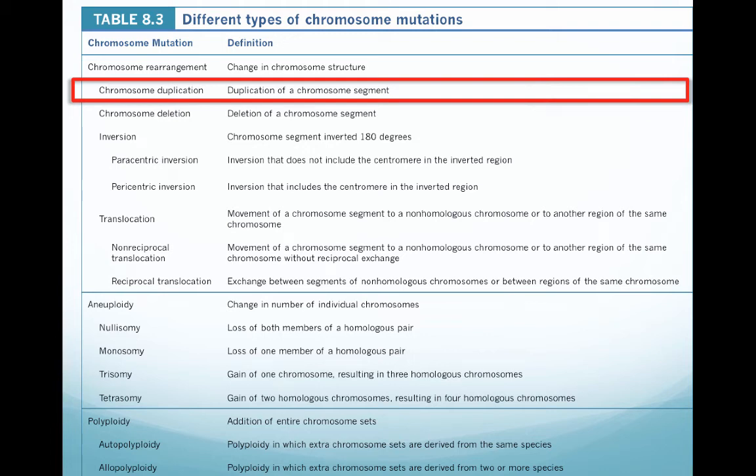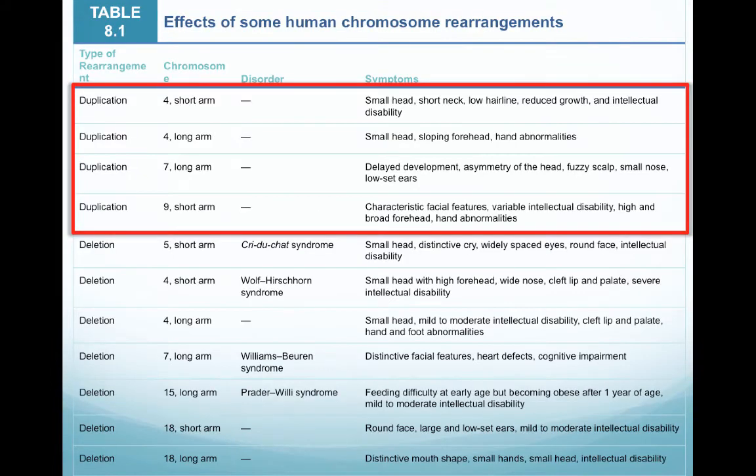The second part of Chapter 8 focuses on chromosomal mutations, and in this link we're going to look specifically at duplication. Duplication is a chromosomal rearrangement or a change in chromosome structure that is the result of duplicated gene information on a chromosome. Duplications can be of major concern depending on what chromosome they actually occur on.